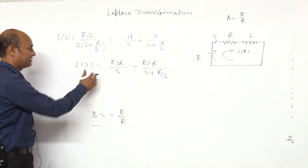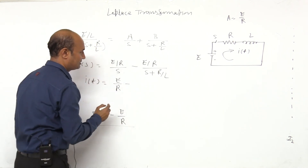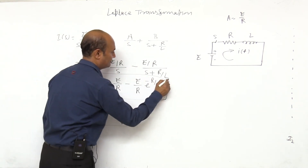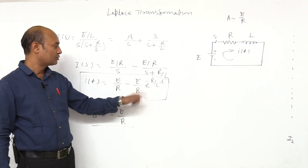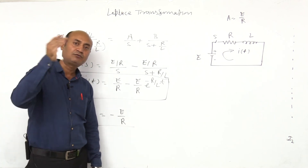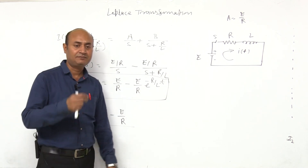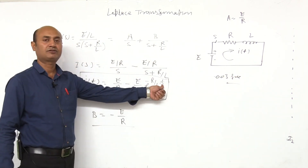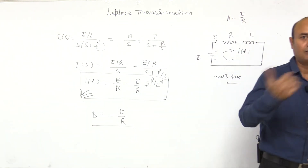Now taking inverse Laplace of the equation, going from S-domain to T-domain: I(t) = (E/R) − (E/R)·e^(−R/L·t). This is the final answer. Jo transient behavior dekhna hai — current jo hai, initial se exponentially increase or decrease kar raha hai. Is technique se aapan calculate kar sakta hai: agar bhi kisi circuit ko on kiya, uske kitne seconds baad current ki value kya hogi. Agar numerical aata hai to E, R, L ki values given hongi aur time ki value put karke Laplace transformation se transient behavior of circuit calculate kar sakte hain. Thank you.